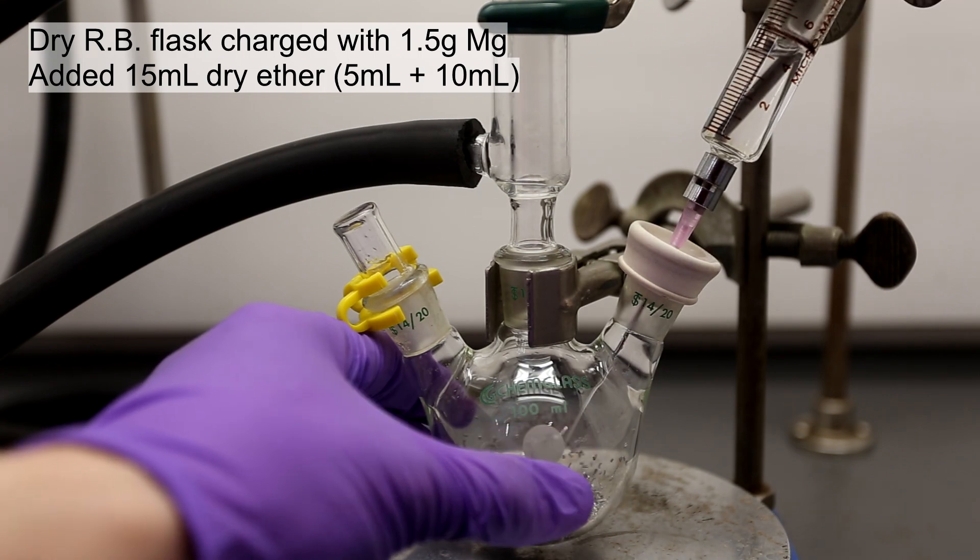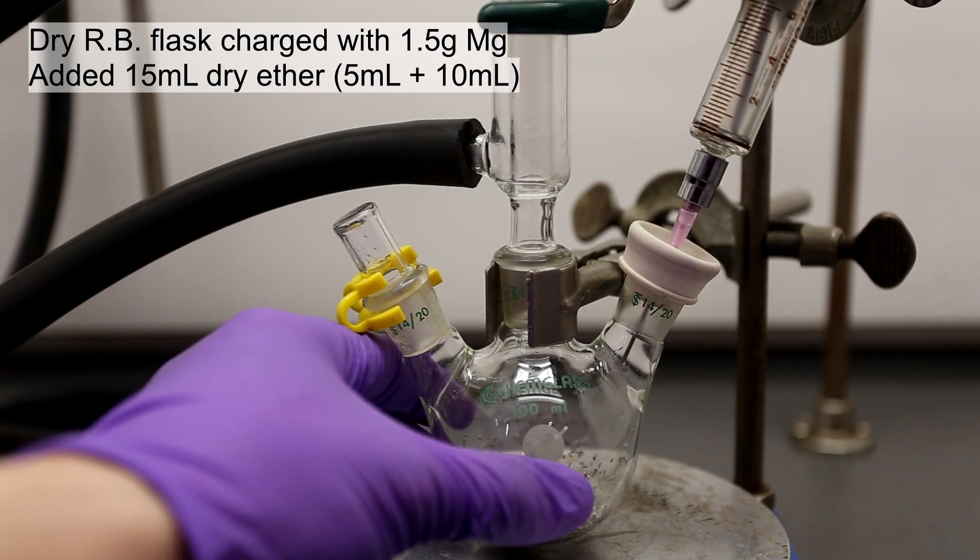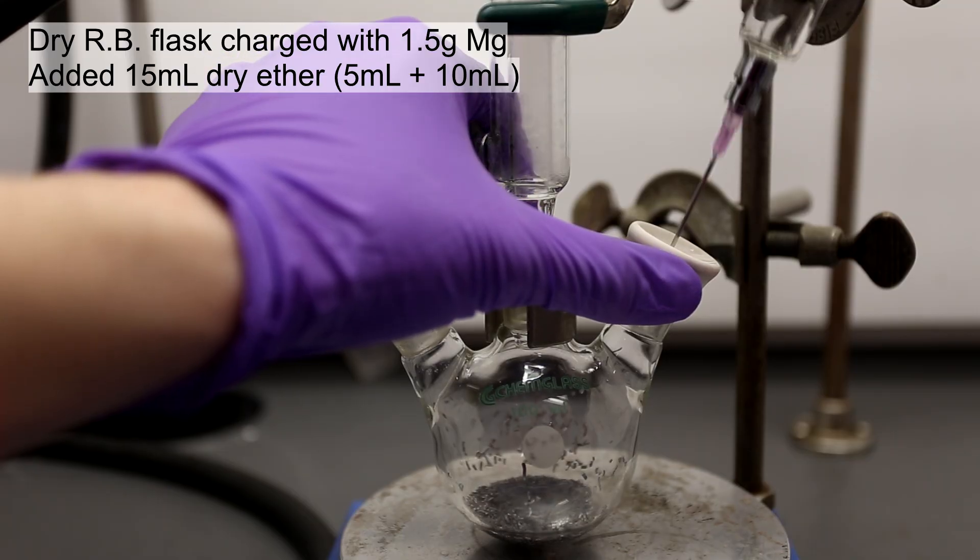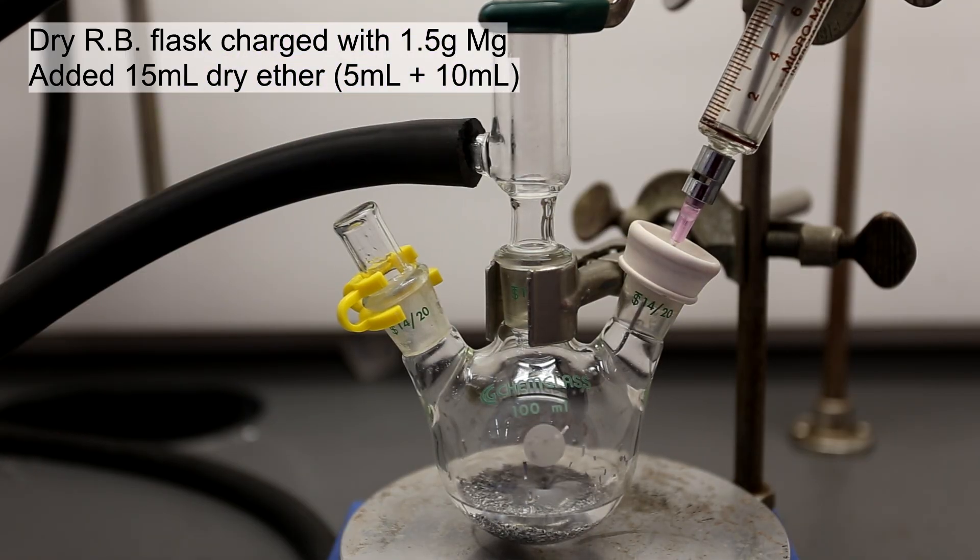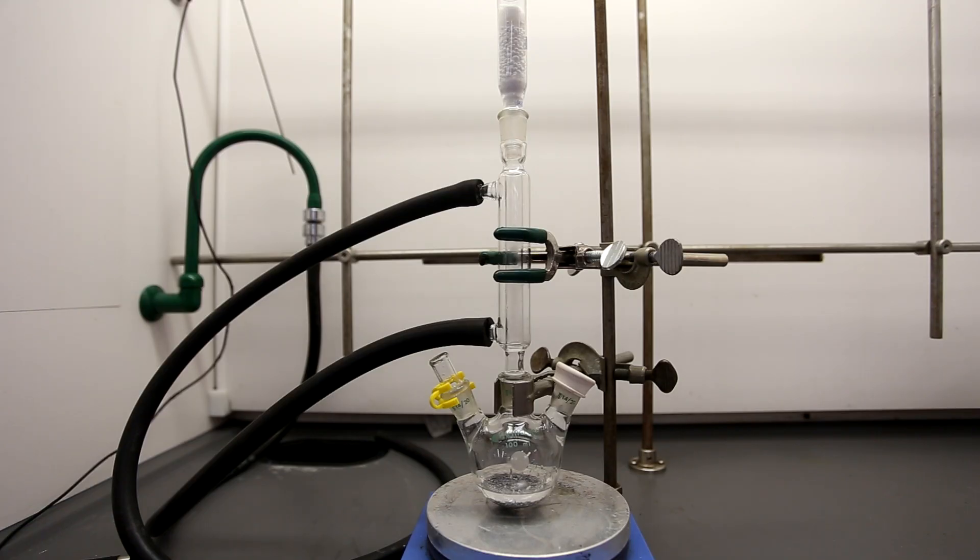An oven-dried, three-necked round-bottom flask was charged with 1.5 grams of magnesium as well as 15 milliliters of dry ether. The apparatus is closed from the atmosphere and a drying tube is at the top of the condenser column.